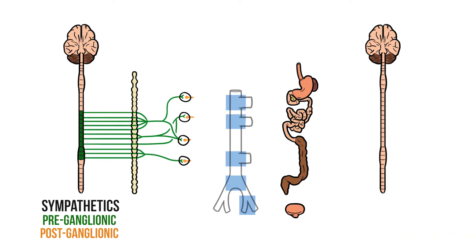So back to the sympathetics. Post-ganglionic fibres from the celiac and aorticorenal ganglia will enter the celiac plexus, from where they'll follow the branches of the celiac artery to innervate the organs of the foregut and the kidneys. The superior mesenteric fibres travel to the superior mesenteric plexus, where they follow the superior mesenteric artery and innervate the midgut. Similarly, inferior mesenteric fibres enter their corresponding plexus and follow the associated artery to supply the hindgut. Finally, some post-ganglionic fibres continue inferiorly towards the superior hypogastric plexus and on to the inferior hypogastric plexuses, finishing by innervating the pelvic viscera.